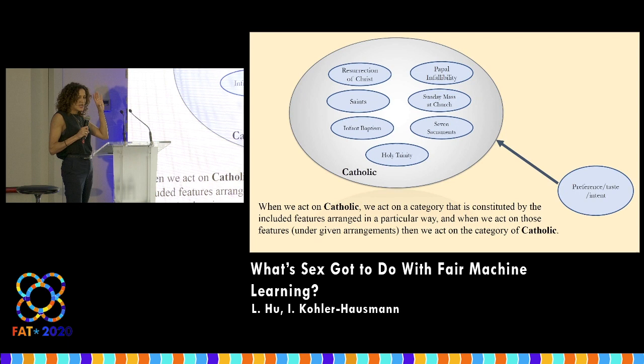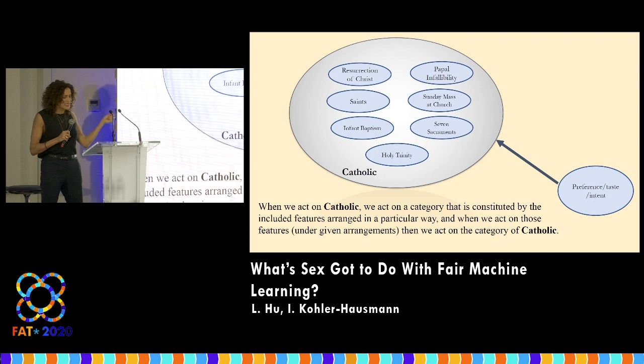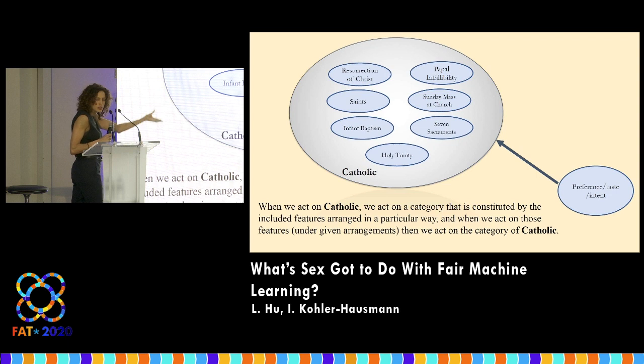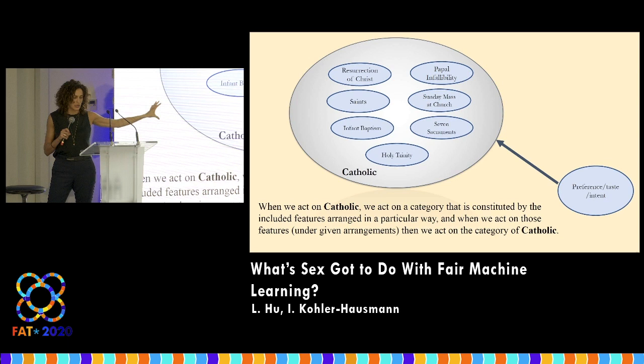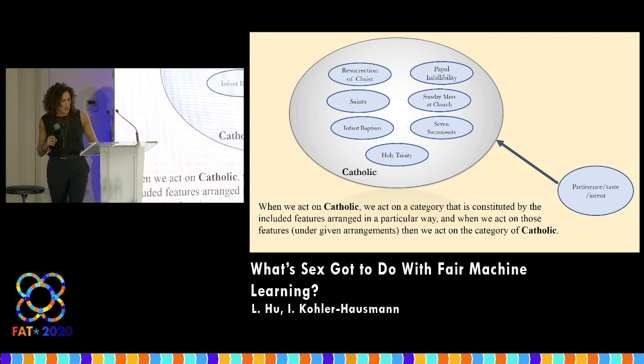What they show us — and I mean this very seriously — is that these meanings are in the category. They're not separate and downstream from it. Going back to Catholic: when we act on a category like Catholic, a socially constructed category, we act on one that's constituted by the very things the DAG represents as ontologically distinct and causally downstream. Just as when we act on the category of gender, we act on a category made by social facts about beliefs, presentation, occupational choice, caregiving, etc.